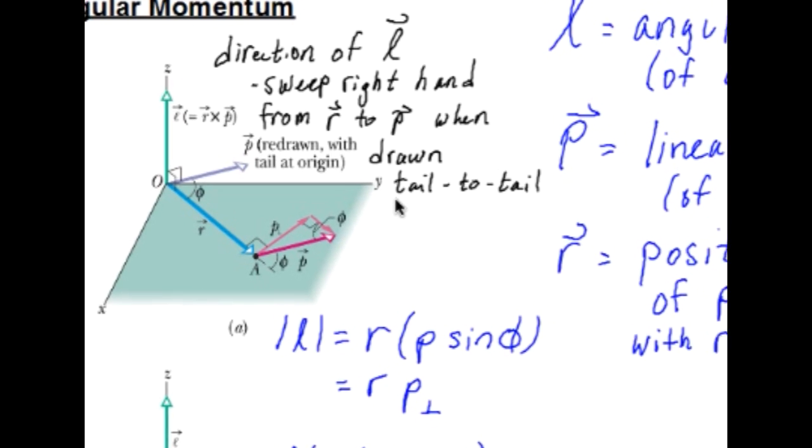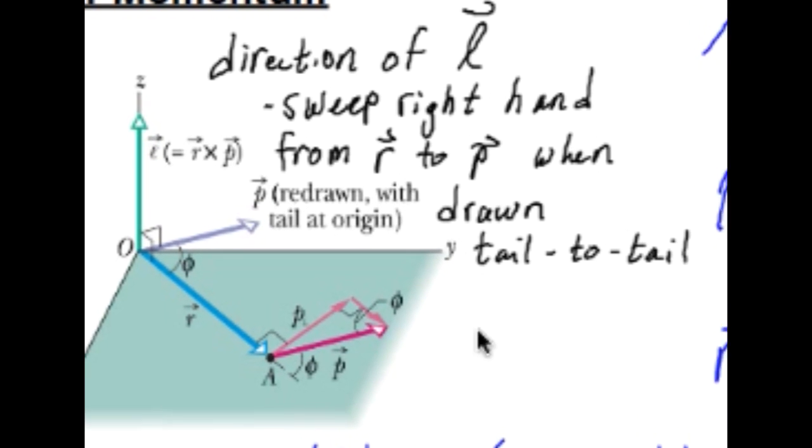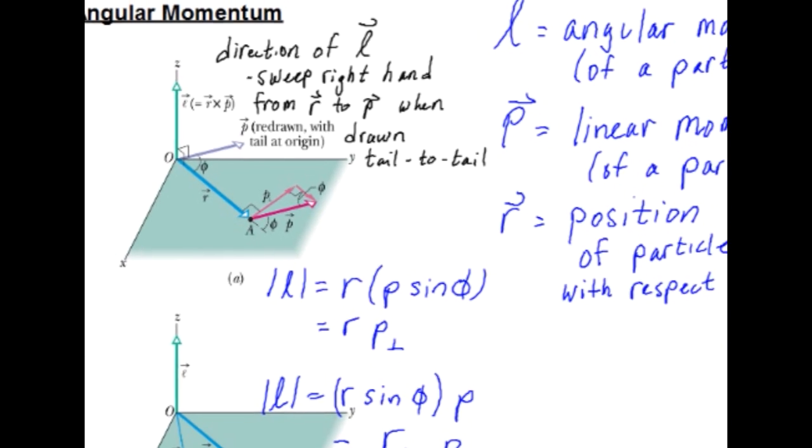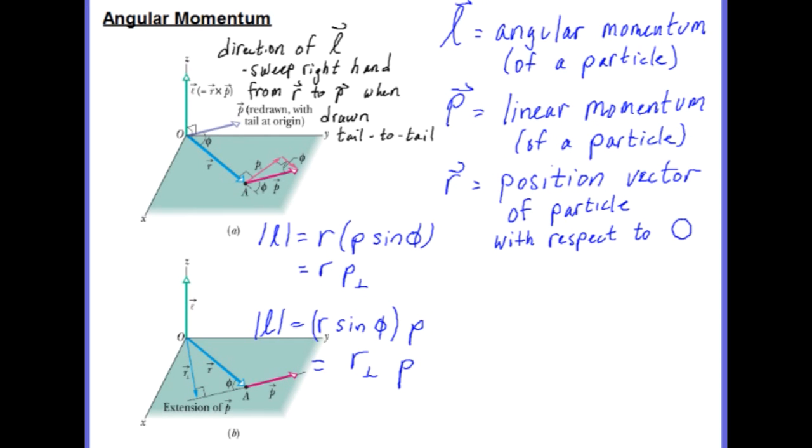And angular momentum is a vector. What is its direction? So as we did with torque, we move the momentum vector to point O so that it is tail to tail with vector R. And then we take our right hand and we sweep our fingers of our right hand from R towards P. So R cross P moving from R towards P. And the thumb of our right hand will point in the direction of the vector L.